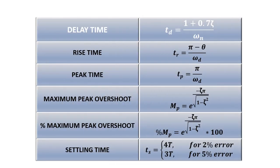The formulas for all the parameters are as follows. Delay time: (1 + 0.7ζ) / ωn. Rise time: (π − θ) / ωd. Peak time: π / ωd. Peak overshoot: e^(−ζπ / √(1 − ζ²)). For percentage overshoot, this value is multiplied by 100. Settling time has two formulas corresponding to 2% and 5% tolerance: 4T and 3T respectively, where T = 1 / (ζ · ωn).